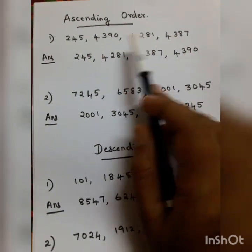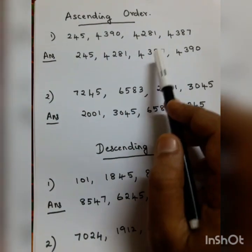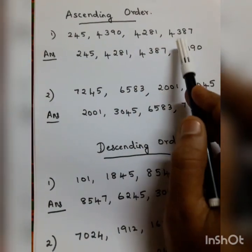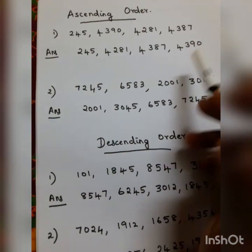8 is less than 9, so 4,387 is written before 4,390. Then 4,390 follows.